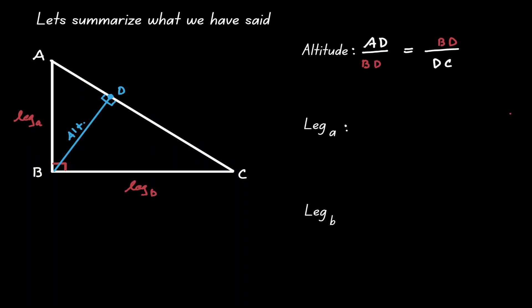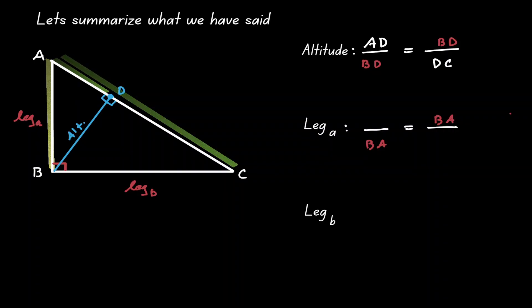Another relationship is when leg A is another geometric mean. If we set up a fraction equal to another fraction, the denominator of the first fraction is going to be leg A — let's call it BA — and the same goes for the numerator of the second fraction. BA is a geometric mean in relation to AD and AC. One way to remember is that AD is in the same triangle as AB and is a section of the hypotenuse of the original triangle, and AC is the whole hypotenuse.